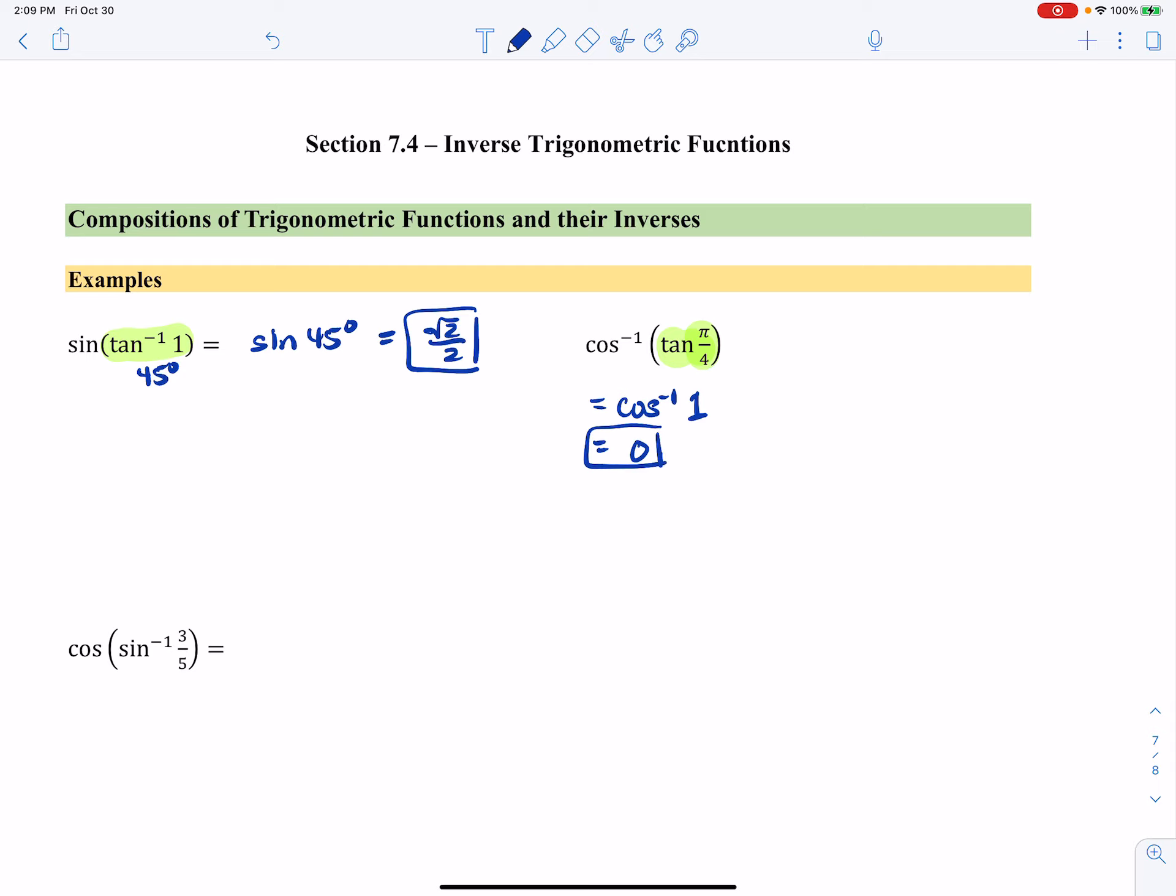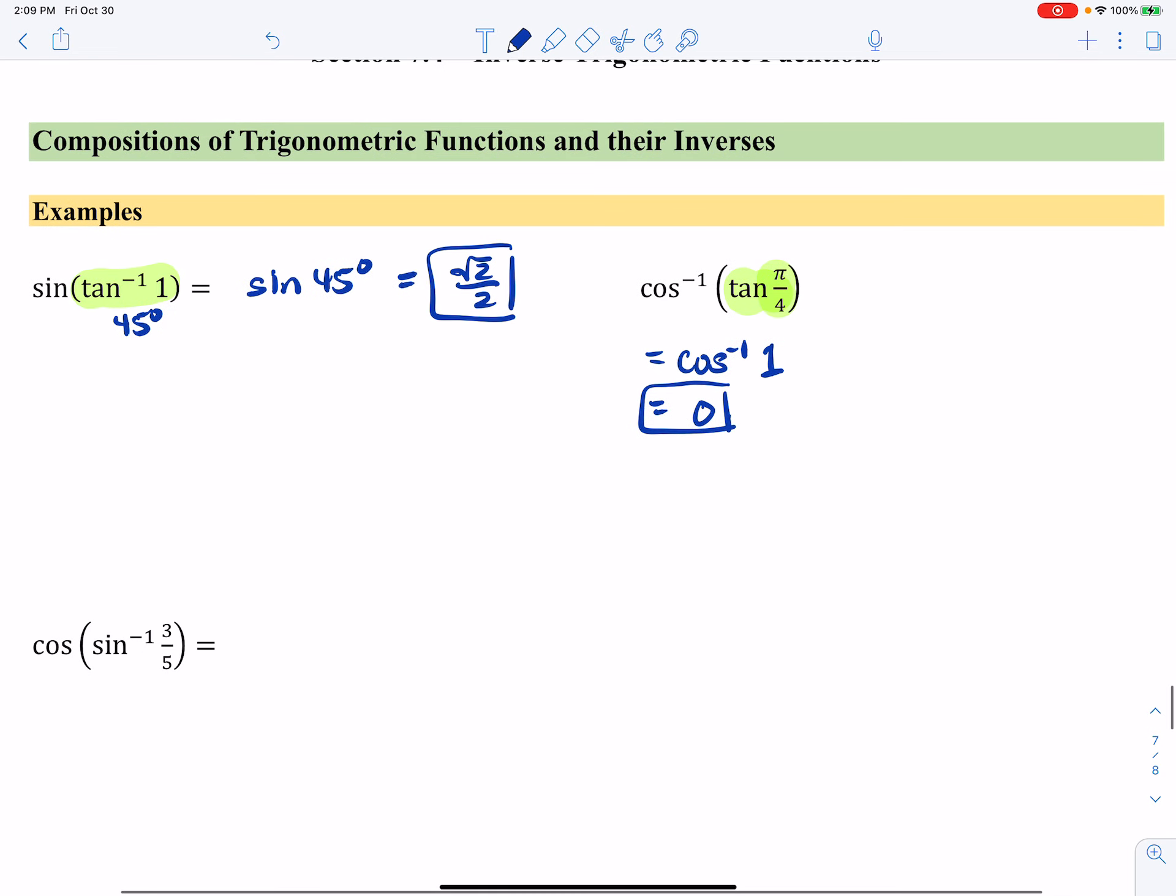Now, here is a more challenging one. We want the cosine of the inverse sine of 3 fifths. Now, that might be a familiar ratio to us, but it's not a familiar angle to us. So I can't just work it out from the inside out.